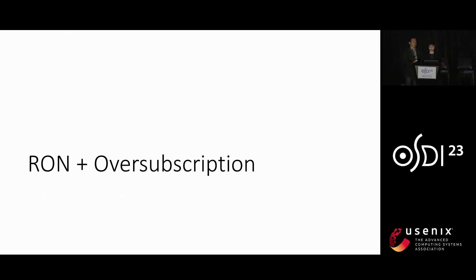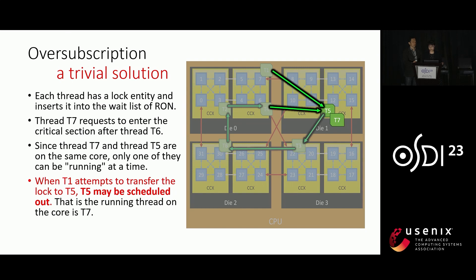In addition to RUN, we have explored the concept of over-subscription, which involves allocating more tasks or threads than the available cores. This can potentially improve parallelism and system performance, but it will also decrease the performance for a given lock-on-lock algorithm — for example, the lock holder could be scheduled out by the operating system. One trivial solution for over-subscription is to consider each thread as an entity. We insert thread seven into the next RUN TSP order. However, since thread seven and thread five are on the same core, only one can run at a time. When thread one attempts to transfer the lock to thread five, thread five may be scheduled out, leading to meaningless spinning and reduced performance.